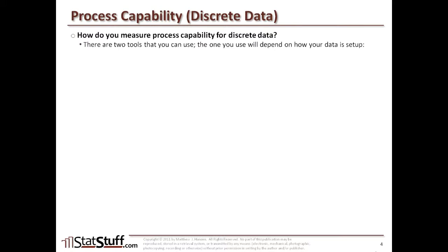Now let's explore how you can begin to run the capability analysis for binomial data. If you have continuous data, you can use those same kinds of analyses for measuring the process capability. But what do you do when you have discrete data? How are you going to measure the process capability for that? There are two tools that you can use to actually measure it. And which tool you use is going to depend on how you have your data set up.